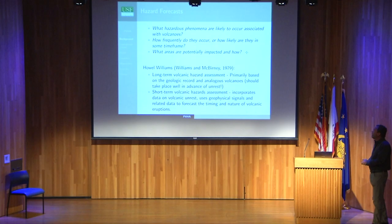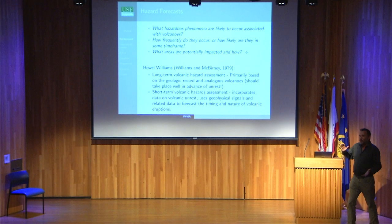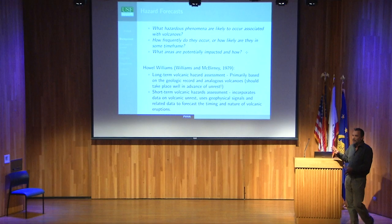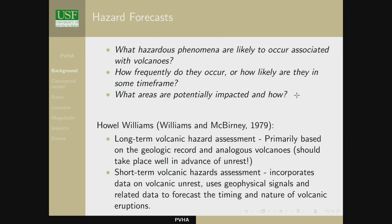It's a bit of a false dichotomy. Why can't I use geophysical data to inform my long-term hazard assessment? How does the geologic record inform what I think is going to happen in the short-term during volcanic unrest? I believe this distinction is going to continue to blur over time, but it's still a fairly useful way to think about how hazards operate.